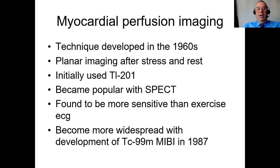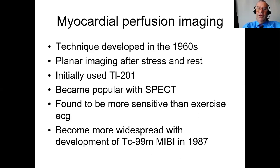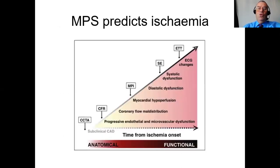Myocardial perfusion imaging was developed in the 1960s, originally using planar imaging after stress and rest. The first agent used was thallium-201, but it didn't really become popular until SPECT arrived. Using SPECT we were able to be more sensitive than exercise-based ECG. Then the technetium agents came in - particularly MIBI in 1987 - which made it much more usable. The interesting thing is it can predict ischemia without causing ischemia.